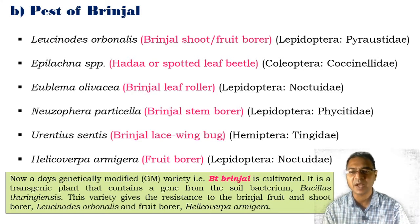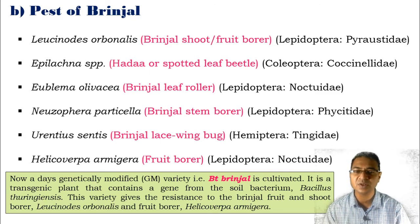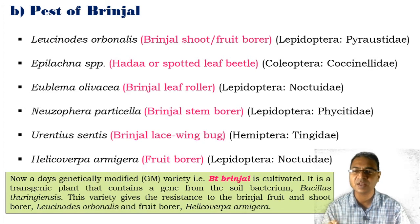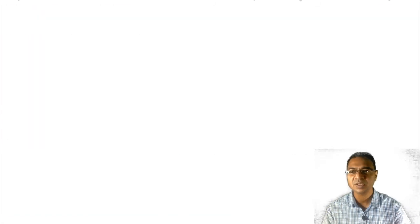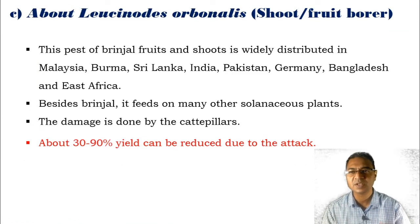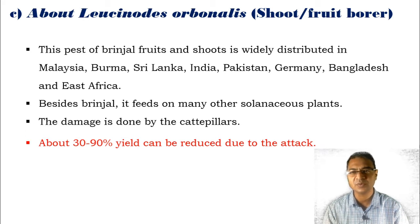Bt brinjal is a transgenic plant that contains a gene from the soil bacterium Bacillus thuringiensis. This variety gives resistance to the brinjal fruit and shoot borer, especially Leucinodes orbonalis, as well as another major pest, Helicoverpa armigera, commonly known as the fruit borer. Now, moving toward Leucinodes orbonalis, basically called the shoot or fruit borer.